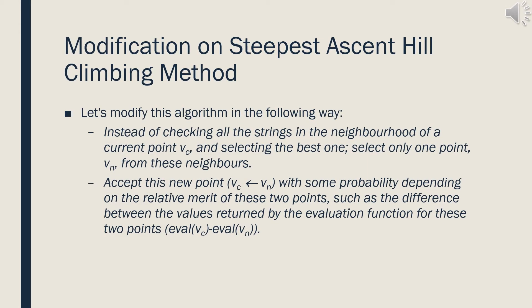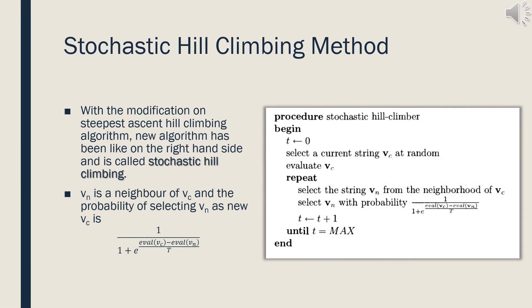Now let's modify the algorithm. Instead of checking all the neighbors of the current point and selecting the best one, select only one point, call it vn, from the neighborhood of the current point vc. Accept this new point vn as the current point with some probability depending on the relative merit of these two points. Relative merit can be eval(vc) minus eval(vn), which is the difference between the values returned by the evaluation function. The new algorithm is called stochastic hill climbing, and the probability of moving towards vn is calculated by the given formula.